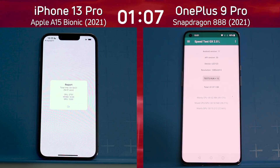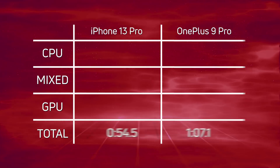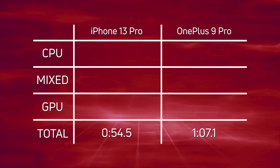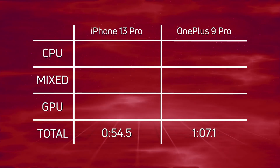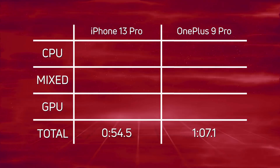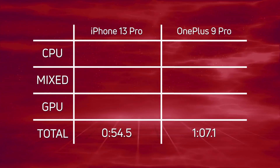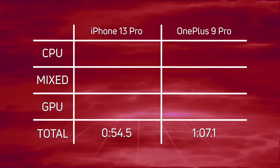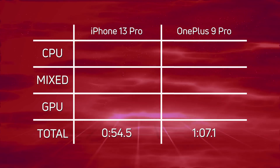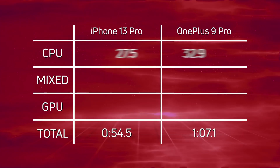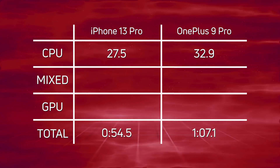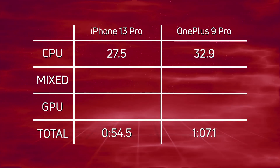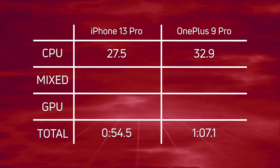Let's break down the scores and see exactly what happened. A convincing win by the iPhone 13 Pro — not unexpected. 54.5 seconds versus one minute 7.1 seconds — that's a difference of 12.6 seconds. For CPU: 27.5 seconds versus 32.9 seconds, a difference of 5.4 seconds.